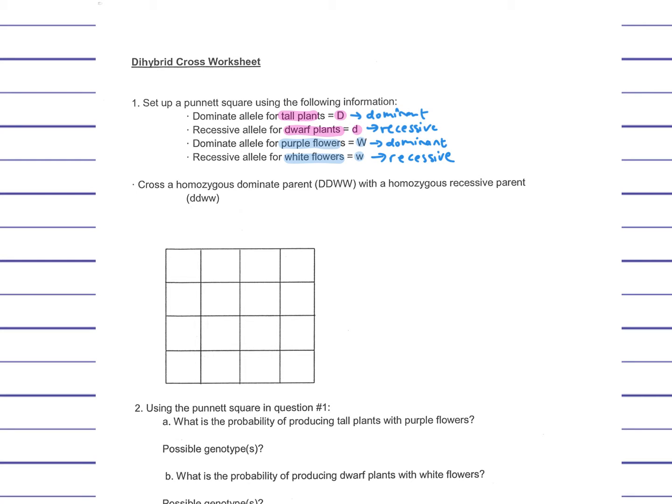So the one parent that we have here is homozygous dominant, so it's going to have homozygous dominant alleles, so big D and big W, homozygous, same alleles for both traits, for tallness and for flower color. And the other one is homozygous recessive, so it's going to have two small Ds and two small Ws.